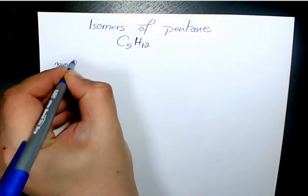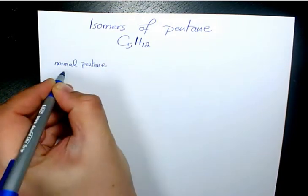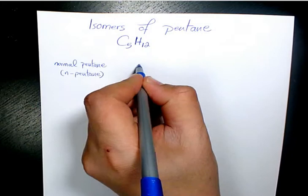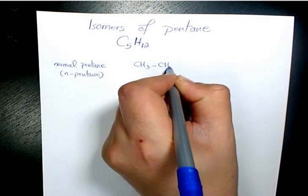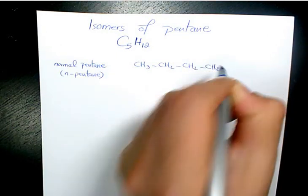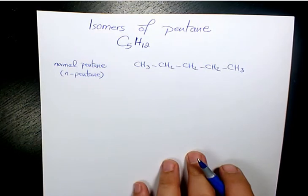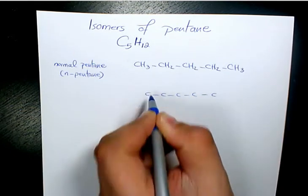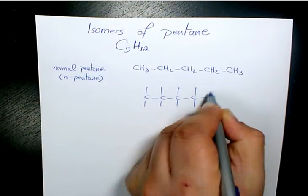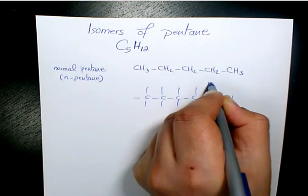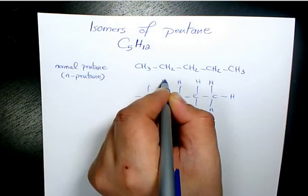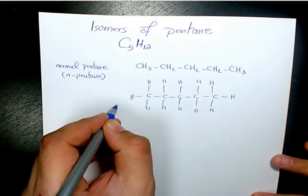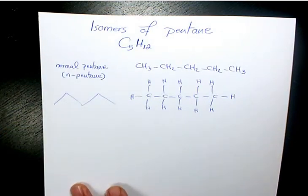The first one is going to be normal pentane, which is also called n-pentane or just called pentane. It's going to be CH3-CH2-CH2-CH2-CH3 — basically five carbons surrounded by hydrogen atoms. You can also show it like this. This is the first one.